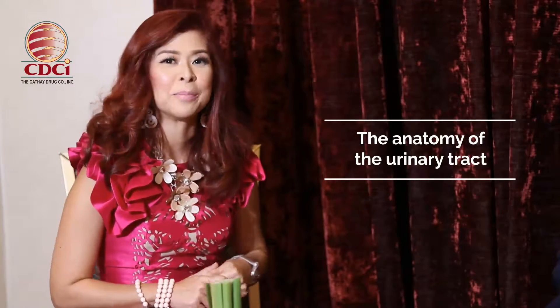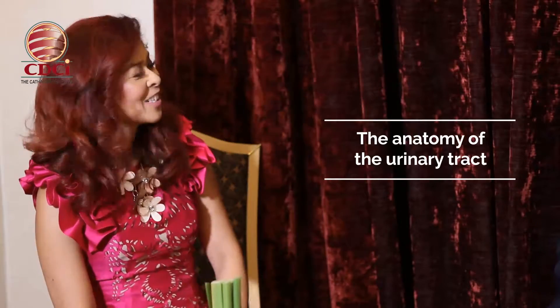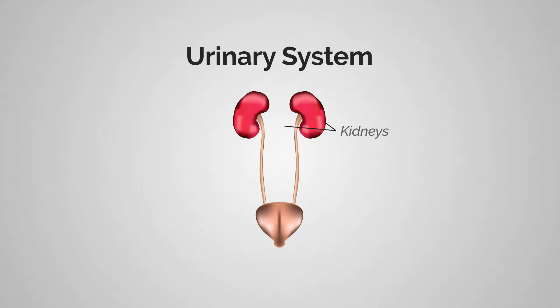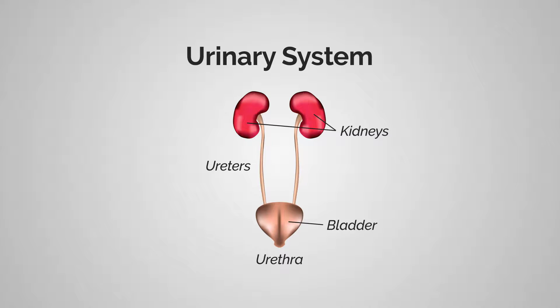Before we begin discussing urinary tract infections, let's first inquire about the anatomy of the urinary tract. The urinary tract is actually a whole system. You usually start with the kidneys first, and then the kidneys are connected to the bladder with two tubes called ureters. Then it goes to the bladder, and the connection from the bladder to the outside is called the urethra.